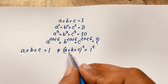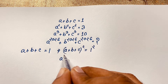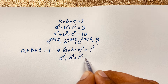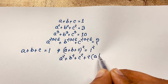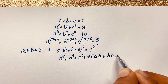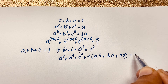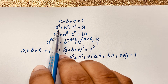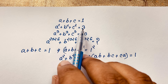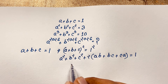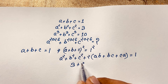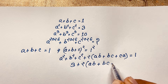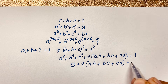Now, we know that a plus b plus c whole squared equals a squared plus b squared plus c squared plus 2 times (ab plus bc plus ca), which equals 1. Remember that our second equation is a squared plus b squared plus c squared equal to 3. So I substitute this: 3 plus 2 times (ab plus bc plus ca) is equal to 1.